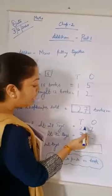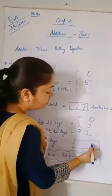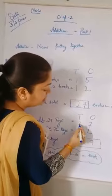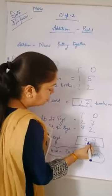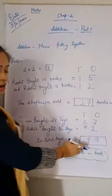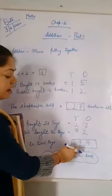See, you have to add this. 7 plus 2, what will come here? 9. So 7 plus 2 is 9. How many total toys are there? 99. Total toys are 99.